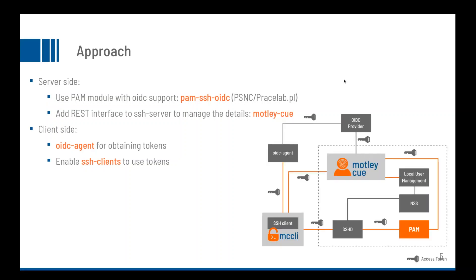This is the architecture. You have the SSH client with the wrapper script MCCLI — the MertliQ command line interface. That one may use the OIDC agent to get an access token, but access tokens can be fed in from any other source as well. The wrapper first connects to MertliQ to check if an account is available. MertliQ talks with the local user management interface and, if configured, may even create an account and returns the username to the client.